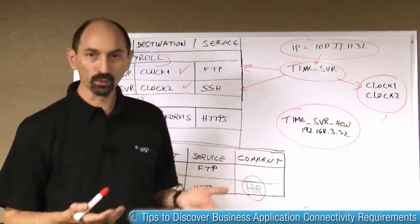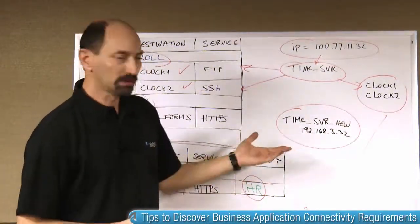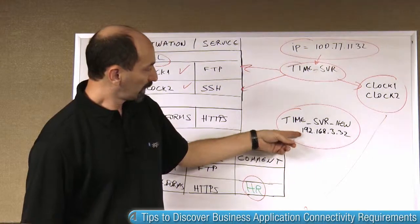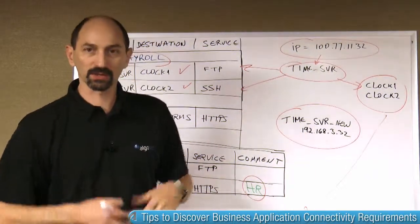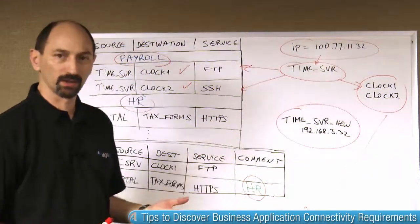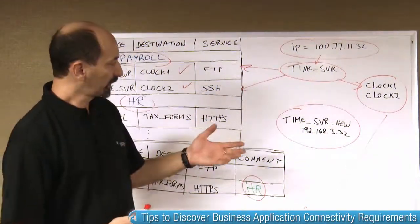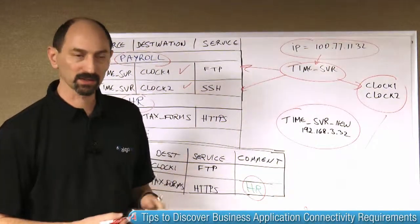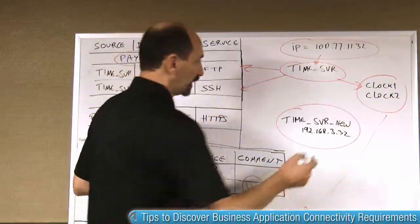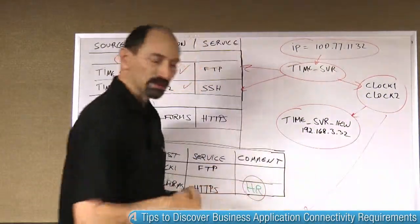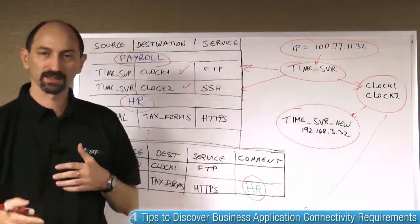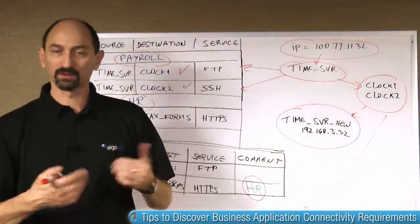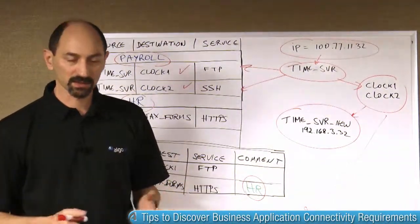If you identify that, you can deduce that this server you've just discovered is also part of the flows that the application at hand depends on. And so you can continue this process of searching, filtering out irrelevant results,